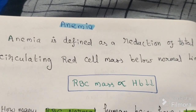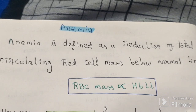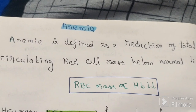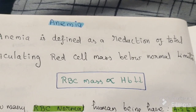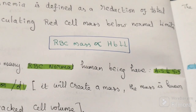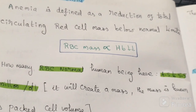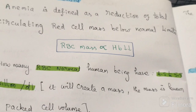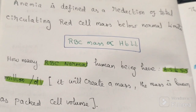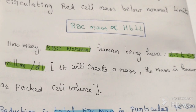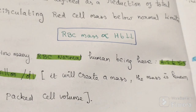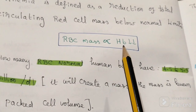The normal limit is 4.5 to 5.5 million per deciliter. So here, reduction of total circulating red cell mass below that normal limit. In practice, the measurement of red cell mass is not easy, and anemia is usually diagnosed based on the reduction in hemoglobin concentration. RBC mass is directly proportional to hemoglobin.